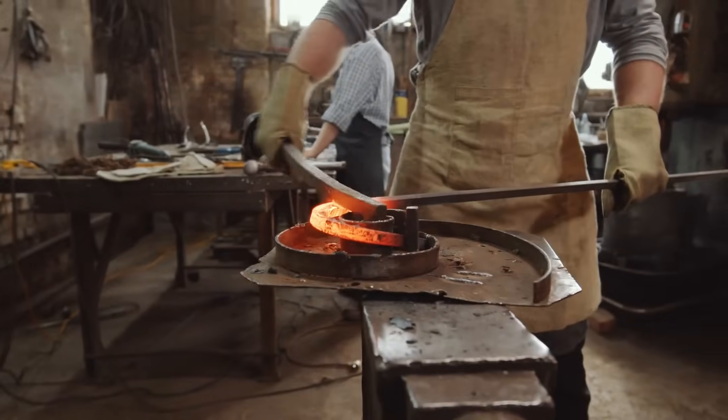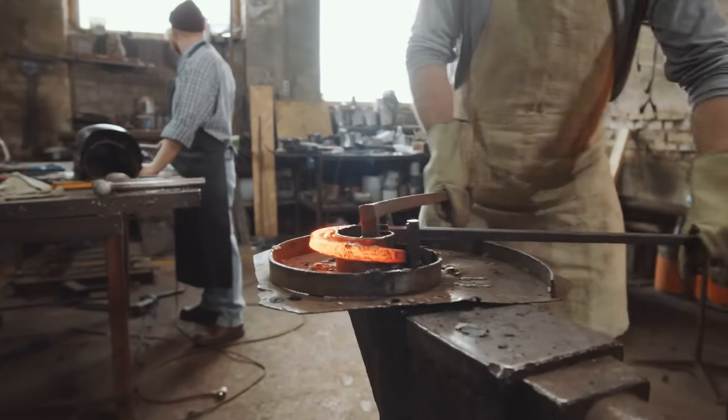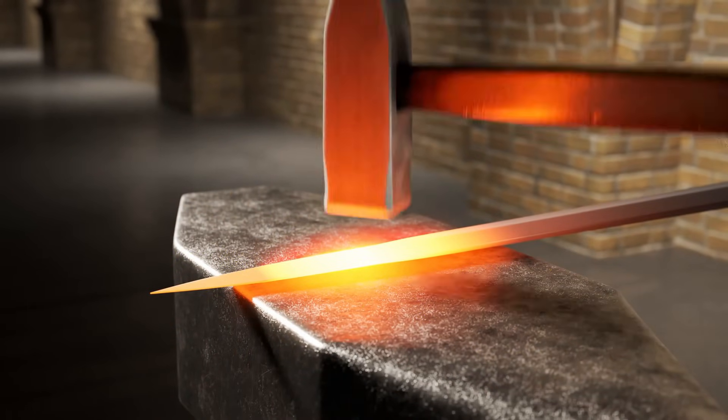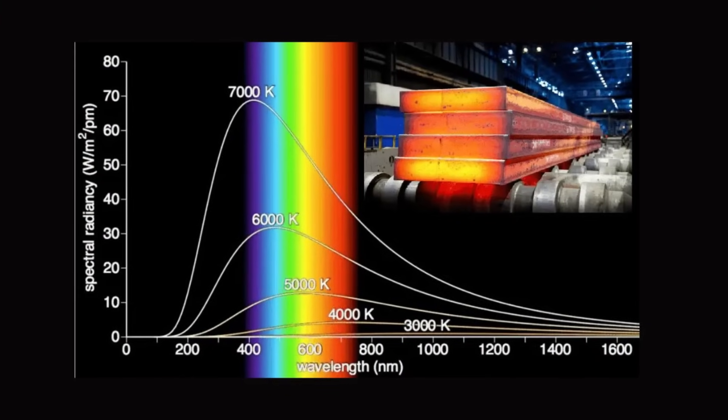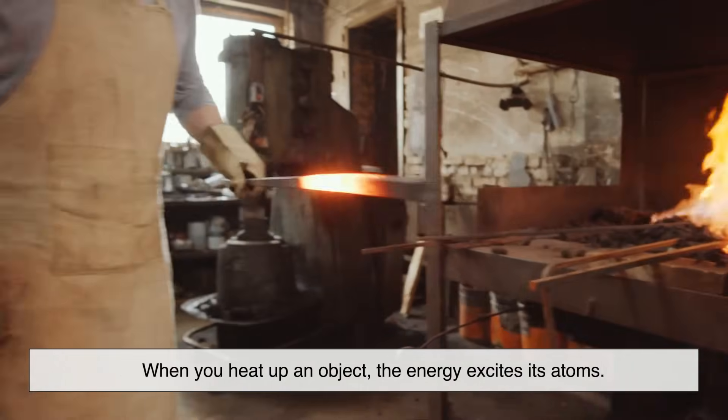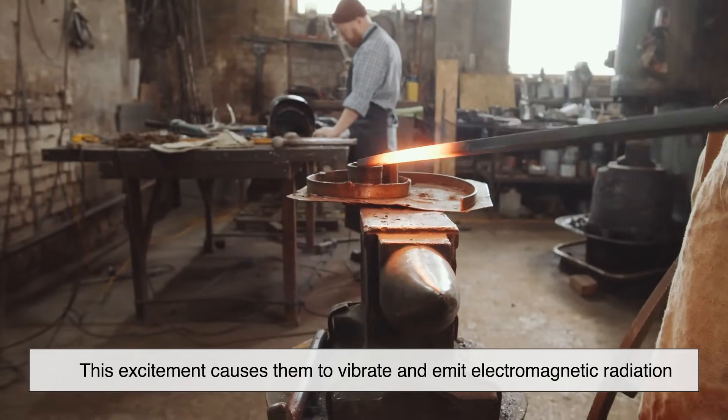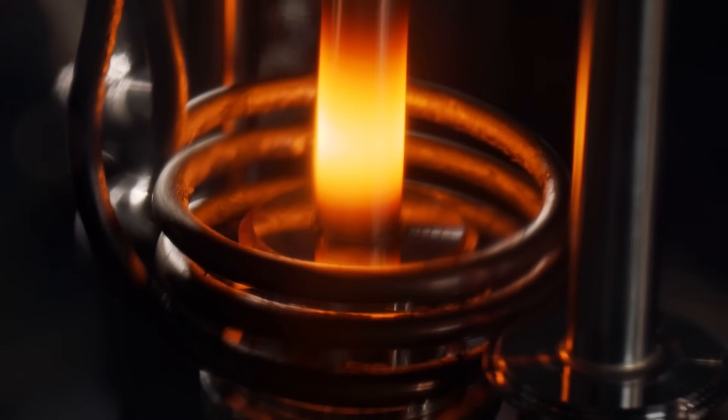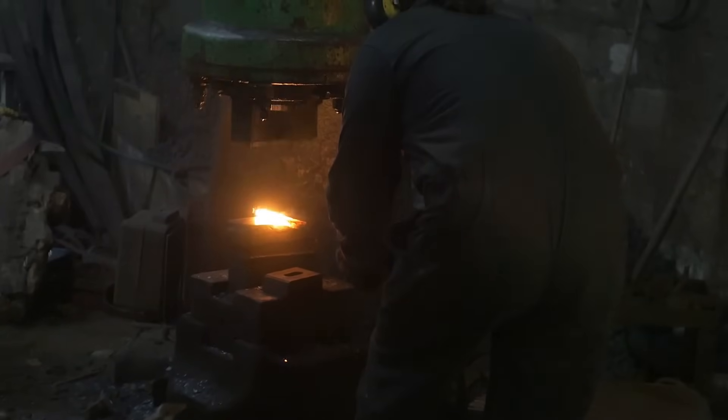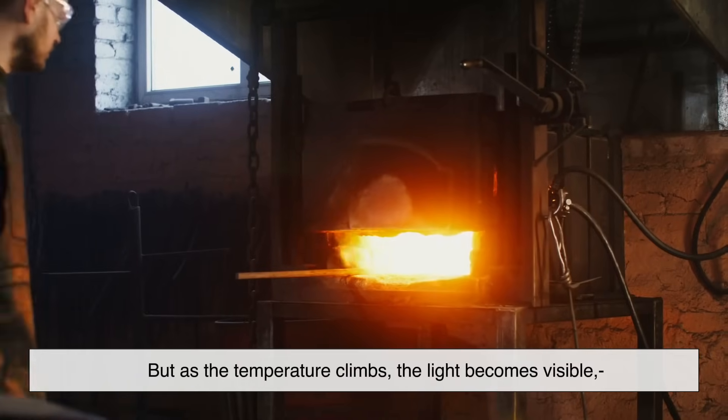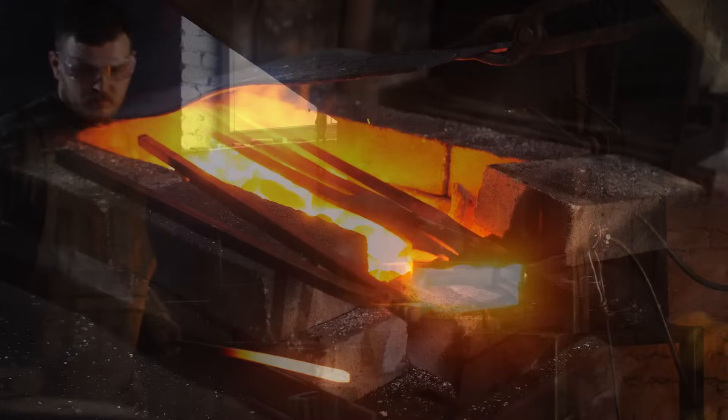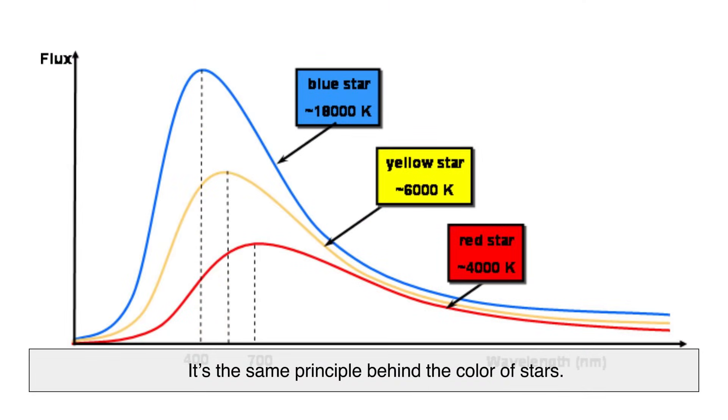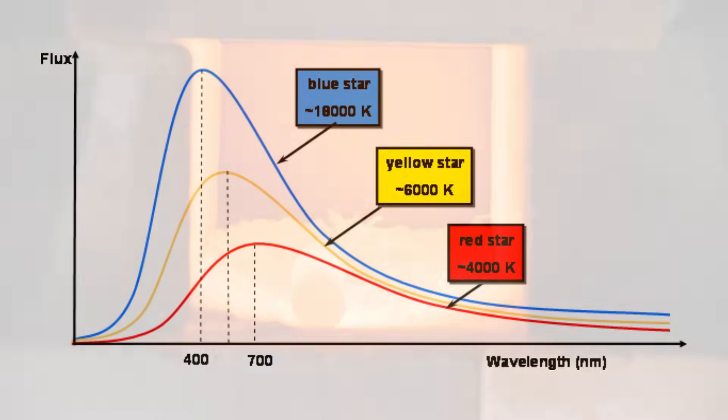So why does any object glow when it's heated? To understand this, we need to touch on a bit of physics, specifically something called blackbody radiation. When you heat up an object, the energy excites its atoms. This excitement causes them to vibrate and emit electromagnetic radiation. As the temperature increases, the type or wavelength of light emitted changes. At first, that radiation isn't visible to the human eye—it's in the infrared range. But as the temperature climbs, the light becomes visible, starting with a dull red glow. Keep heating and the color shifts to orange, then yellow, and eventually white or blue. It's the same principle behind the color of stars—cooler stars look red, hotter stars appear blue or white. The same thing happens with steel, just on a smaller, earthly scale.